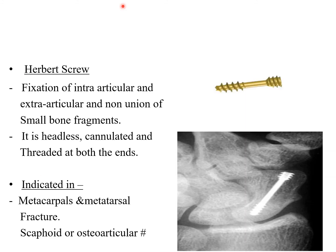The Herbert screw is a headless screw, allowing the implant to sit below the bone surface without obstruction. It is used for fixation of intra-articular and extra-articular non-union of small bony fragments. It is cannulated and threaded at both ends, indicated in metacarpal, metatarsal, scaphoid, and osteoarticular fractures.